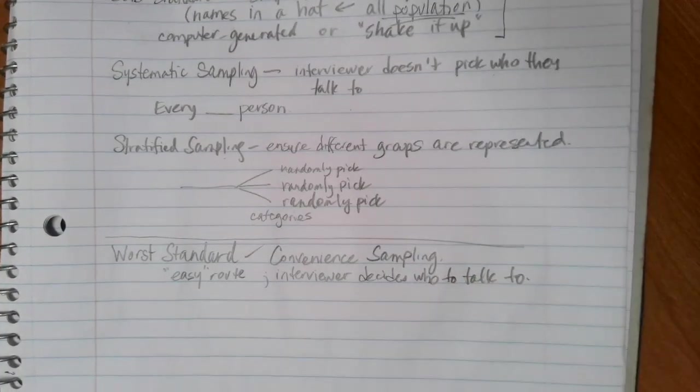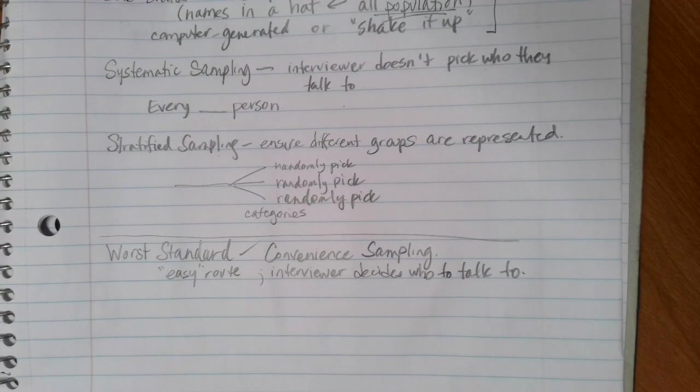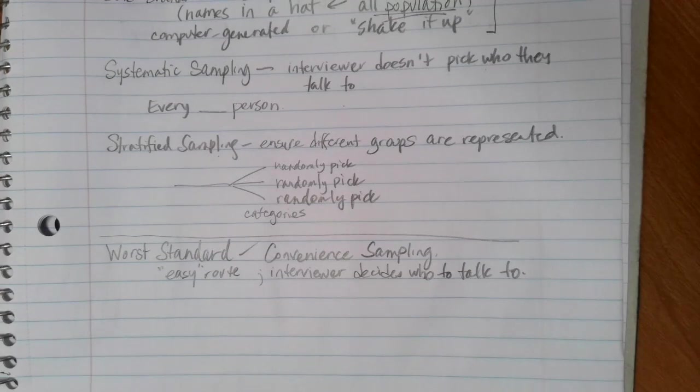And the problem is, as people, you may feel like you're a random person, but we're not random in terms of how we psychologically decide who we're willing to talk to, who we would approach or who we wouldn't approach.